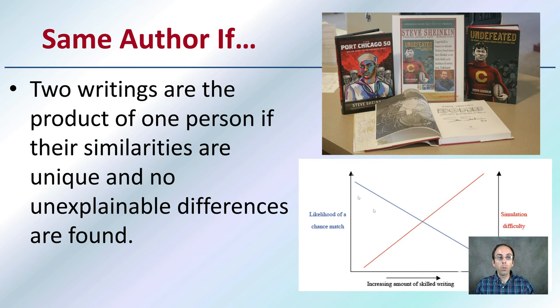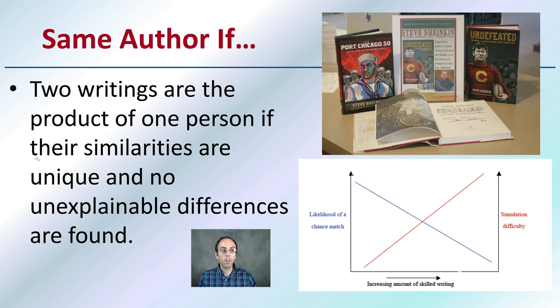So it's the same author if two writings are the product of one person, if their similarities are unique and no explainable differences are found. So we see the different books here. We see the different authors. Things might look a little different, even though it could be from the same person. So we're trying to find what defines or what matches up to be identified as the same author.